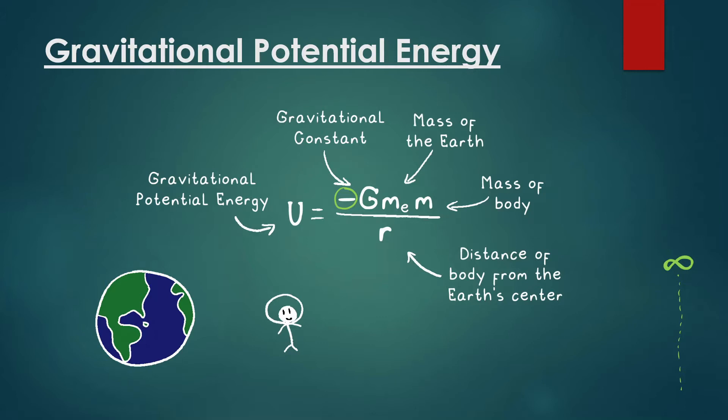The reason why it's zero at the infinity line is because this is the point where, if an object is infinitely far away from another object, it no longer has this gravitational attraction — it no longer has this gravitational pull. So that's why the potential energy can only be zero at this infinite part when R goes to infinity.